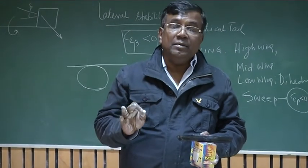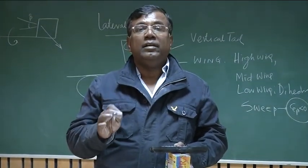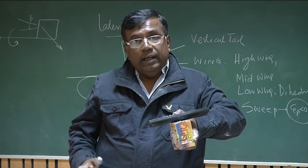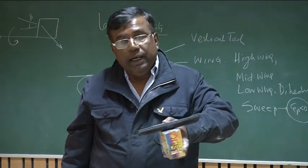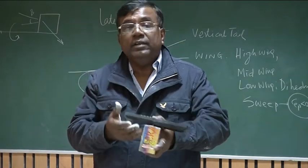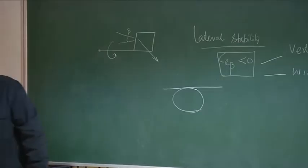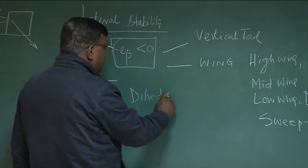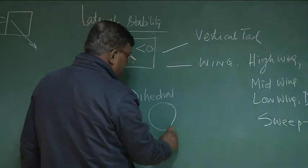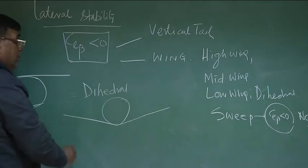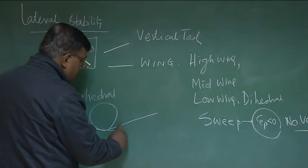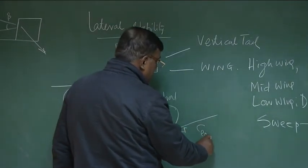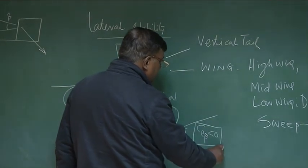If Cl_beta is negative, the aircraft is statically laterally stable. We achieve this through the vertical tail and the wing configuration — high wing, mid wing, or low wing with dihedral. Sweep also generates some Cl_beta negative, which is used in aircraft designed to have minimum radar cross-section with no vertical tail. If you give dihedral to a low wing, you can get Cl_beta less than 0. This is also extremely important.